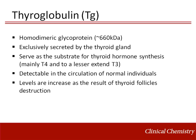Thyroglobulin is a 660,000 molecular weight glycoprotein produced exclusively by the follicular cells of the thyroid. It is secreted into the follicular lumen where it serves as the precursor of and storage reservoir for the thyroid hormones T4 and T3. T4 and T3 are released after thyroglobulin is endocytosed and proteolytically degraded into the thyroid site. Small amounts of intact thyroglobulin are secreted alongside T4 and T3 and are detectable in the serum of normal individuals with levels roughly parallel in thyroid size.